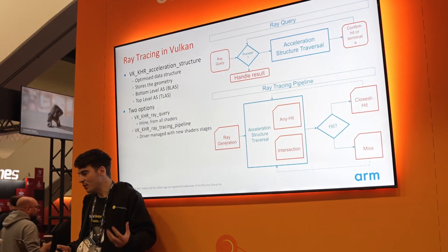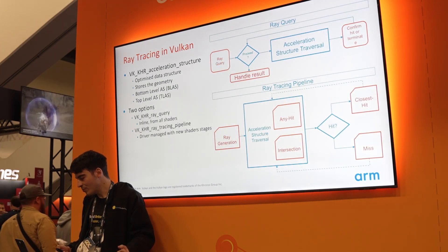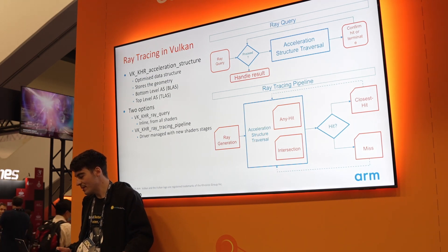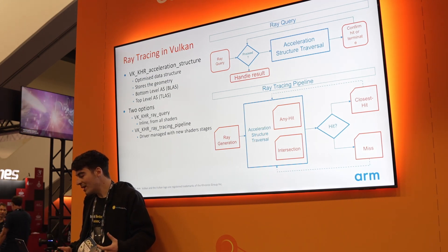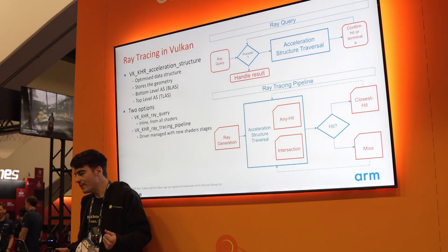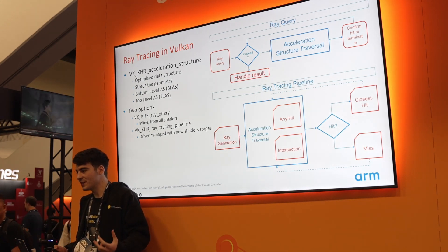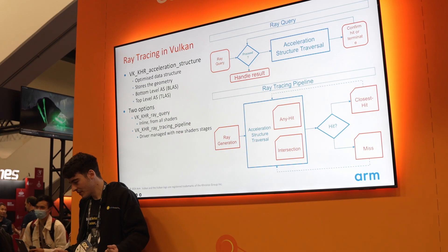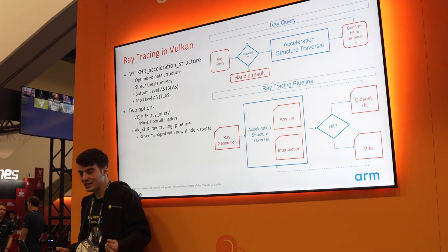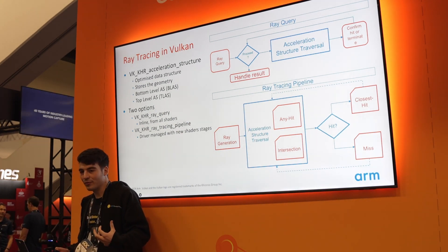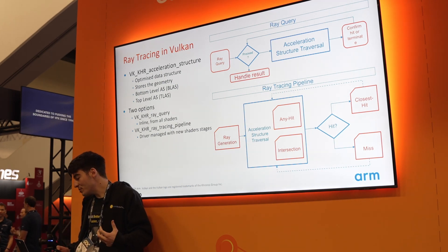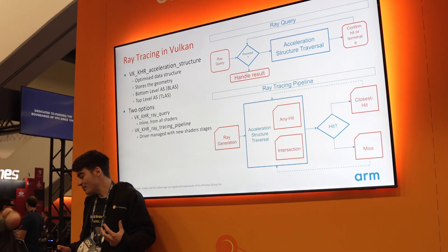For ray traversal, Vulkan offers two options. First, we have Ray Query — our preferred and recommended way of doing ray tracing. Ray Query launches rays inline from all possible shaders, making it very easy to add ray tracing to existing effects. Ray tracing pipeline is a more driver-managed approach — it's more of a black box where you use shaders to control ray traversal. We recommend you use Ray Query instead of the ray tracing pipeline.